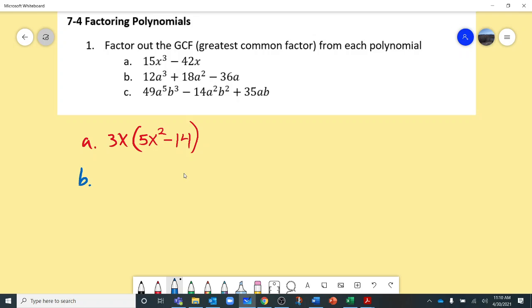For B, what goes into 12, 18, and 36? So I'm going to try something. And I'm just going to take the greatest common factor that comes to my mind for all three of these. And then I'm going to double check something when I'm done. So I know that 6 goes into all three of these. So I'm going to try that. So 6. And then I have A cubed, A squared, and A. A is going to be my greatest common factor.